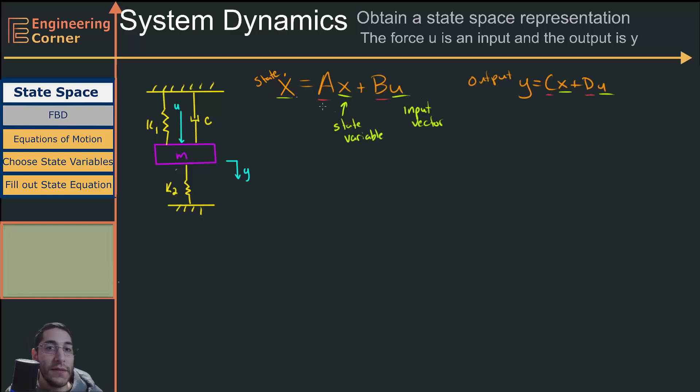These are just matrices that have coefficients that we need to solve for. So this is my system matrix, B is my input matrix, C is my state output matrix, and D is my control output matrix. And y is just going to be my output vector.